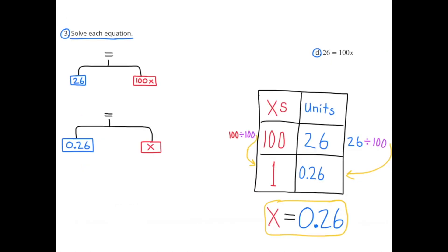D: 26 equals 100 X. Again, in the table, I have the X's on the left and the units on the right. 100 X's divided by 100 equals 1 X. I also have to divide the units by 100. 26 divided by 100 equals 26 hundredths.